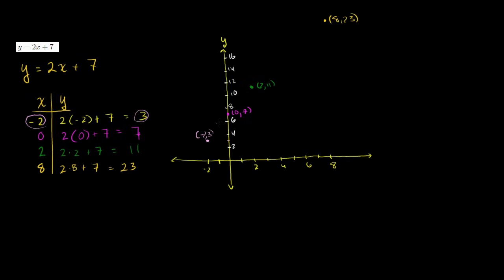If we connect the dots, you'll see a line form. I've hand-drawn it, so it might not be perfectly straight, but if you had a computer do it, it would be a straight line. You could keep picking x values and figuring out the corresponding y values — y is a function of x. If you picked every possible x and plotted every one, you'd get every point on the line.